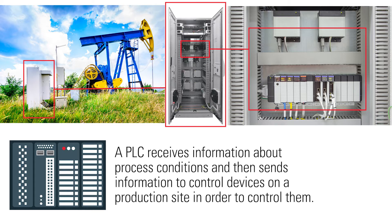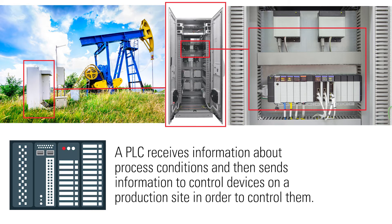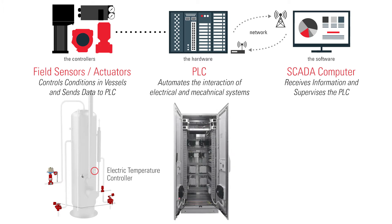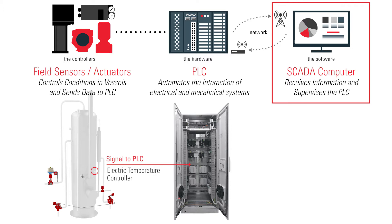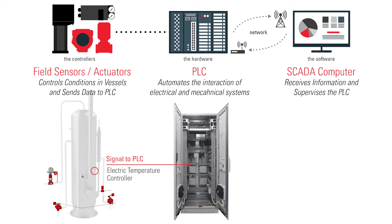Let's take a brief look at one example of how a PLC could work. An electric temperature controller is digitally reading a temperature in a heater-treater. You have specified a setpoint in your PLC and set a protocol so that it will react when the temperature reading gets above or below that setpoint. To send and receive this data, a PLC uses a communications system called SCADA. If the temperature gets above the setpoint, the PLC will send a signal to a burner valve to reduce the amount of supply gas going to your burner, which will lower the temperature.